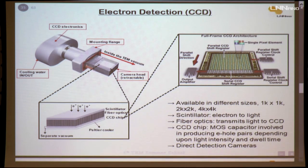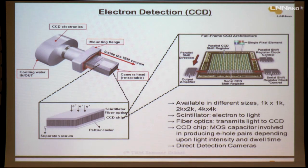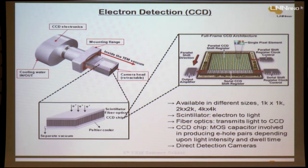There is now a good advancement called the direct detection camera, introduced only one or two years ago. In the direct detector, both the scintillator and fiber optics are eliminated. As a result, images have really very good resolution with much reduced noise compared to the CCD.